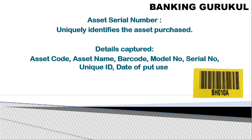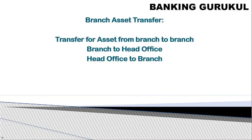The asset serial number is a unique number assigned to each purchased asset. For example, if 10 laptops of the same company and same model are purchased, each gets a unique asset serial number. Details captured include asset code, asset name, barcode, model number, and serial number. Using this unique code, you can identify which location an asset is in or to whom it has been assigned. Branch asset transfer records the movement of assets between branches — for example, if head office purchases laptops and transfers them to a branch, all such transfer details are captured.